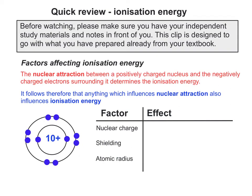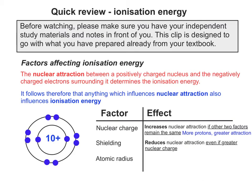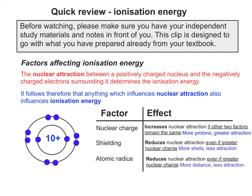So your main factors you need to discuss in terms of their effect on nuclear attraction are nuclear charge, shielding, and atomic radius. Nuclear charge, provided shielding and atomic radius remain the same, increases nuclear attraction — more protons, greater attraction. Shielding reduces nuclear attraction even with greater nuclear charge — more shells, less attraction. And atomic radius: more distance, less attraction.